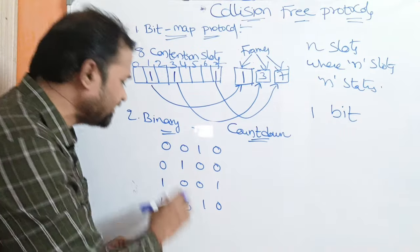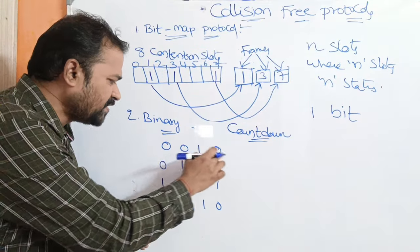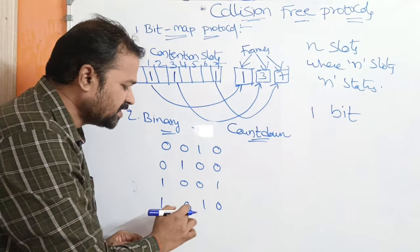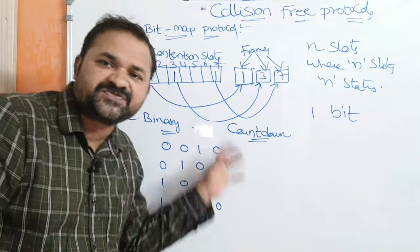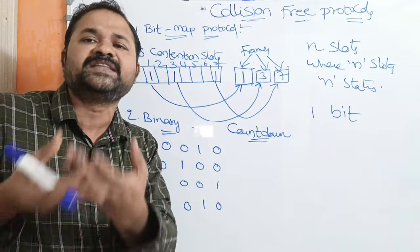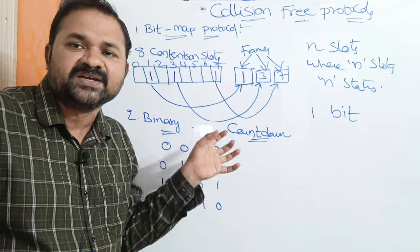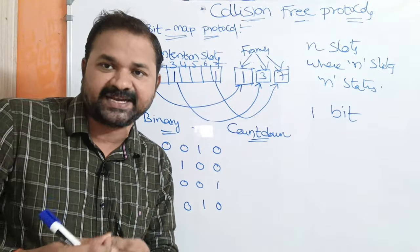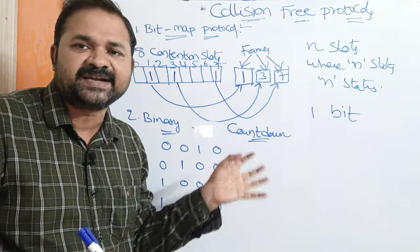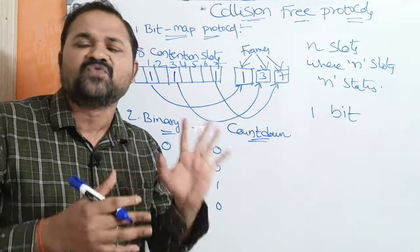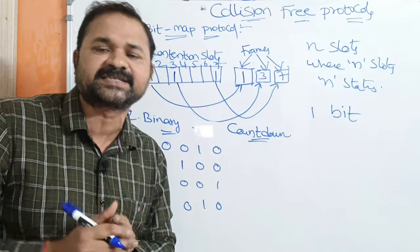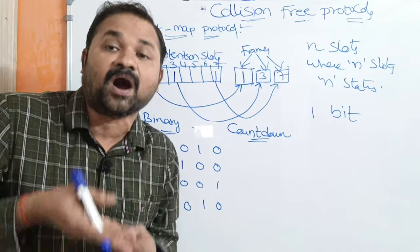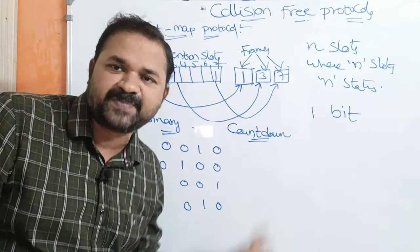In binary countdown, if a station wants to transmit a frame, it broadcasts its binary address to all the stations. Here we have 4 stations with addresses such as 0010, and these 4 stations are all interested in sending frames. Each address is 4 bits in size. We then perform a Boolean OR operation on the respective bits of all competing addresses.